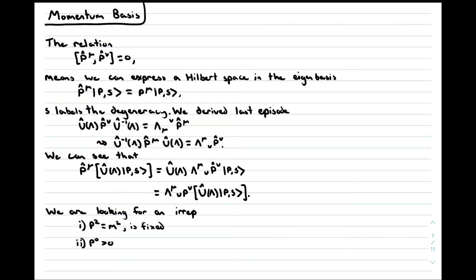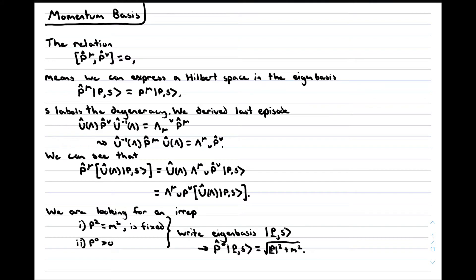So from now on, we label a momentum eigenstate with its three-momentum, and we know that the eigenvalue of the time component is just given by the square root of p² plus m², which is the energy of the particle.